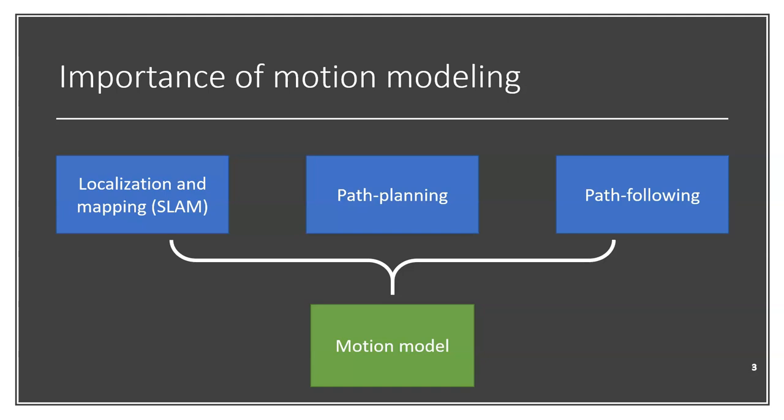For example, for localization and mapping, the motion model can provide a good initial estimate of the vehicle displacement between time steps. Secondly, for path planning, it can allow to do path planning by taking into account information such as the vehicle limits or the energy consumption.